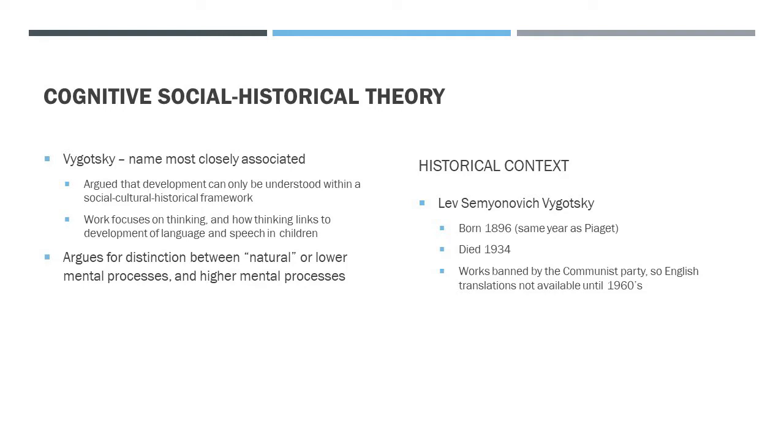Now Piaget, who we studied earlier, acknowledged the significance of social factors, especially parents and peers. But in contrast, Vygotsky — whose theory we're studying now, cognitive social historical theory — is often referred to as an interactionist. He argued that development can only be understood within a social, cultural, historical framework. At the heart of his work is a focus on thinking, and he said it links to the development of language and speech in childhood. The crux for him is the combination of cognition and speech or language. Vygotsky conceptualized natural or lower mental processes and higher mental processes as distinct, and saw both a continuous and a discontinuous path from animals to humans.